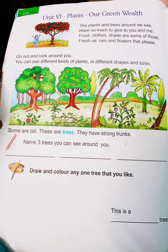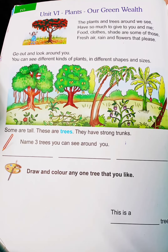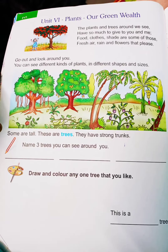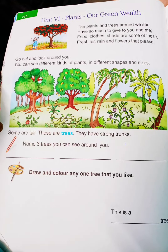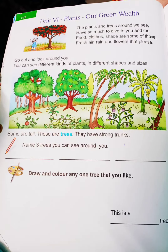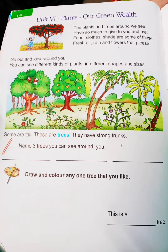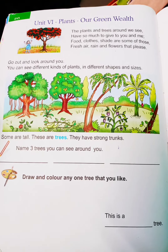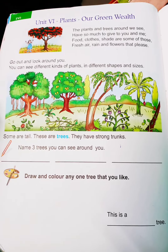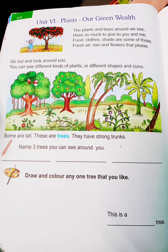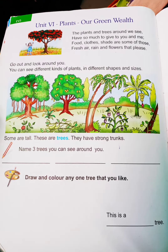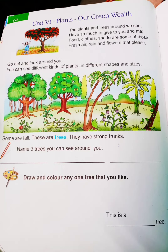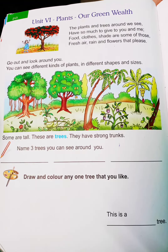Good morning children, welcome to EVA session, Unit 6: The Plants - A Green Wealth. We can see so many plants around us, so they are our friends and we must take care of them. We have to water the plants morning and evening, two times every day.